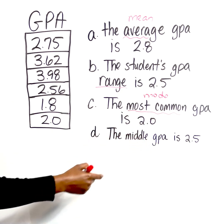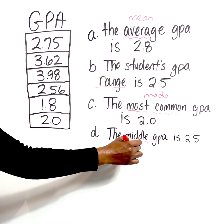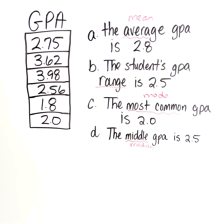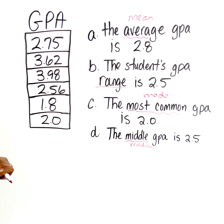And then the middle GPA is 2.5. We know the value that falls in the middle is the median. So what we're going to have to do is we're going to have to calculate those values and compare them against what was given, so we will know what was true and what's not true. So we'll just start with A. It says the average GPA is 2.8.